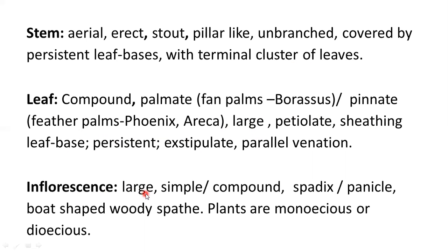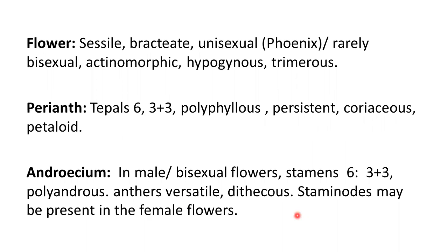Inflorescence is very large. It may be either simple spadix or compound spadix, and sometimes it may be a panicle, with a boat-shaped woody spathe. Plants are monoecious or dioecious. Monoecious means both the male flowers and the female flowers are found on one and the same plant. Dioecious means the male plant and the female plant are separate.